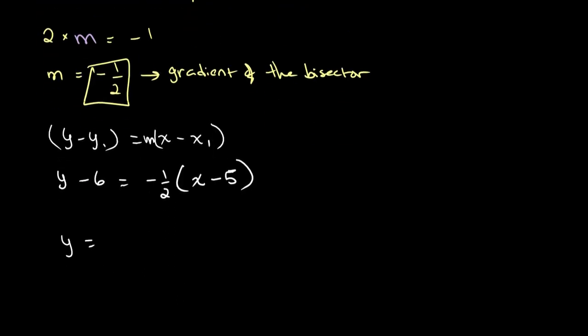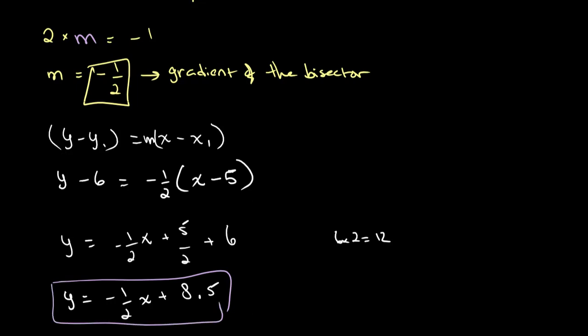From this we get y equals negative 1 over 2 x plus 5 over 2 plus 6. Converting 6 to twelfths, we get 5 plus 12 is 17, giving us 17 over 2. And this right here is our final equation for the perpendicular bisector.